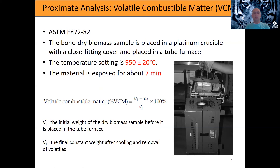The volatile matter equation gives you an idea of the biomass quality. Some biomass types have volatile matter anywhere from 75 to 85 percent — fairly high — compared to coal, which is around 40 to 45 percent.